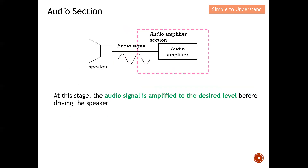Last is the audio section. The signal at this stage is still very weak to drive a speaker, so the audio amplifier boosts the weak signal to a large enough level before it is sent to the speaker to broadcast the voice or music. The audio signal is amplified to the desired level before driving the speaker — that is the role of the audio section.